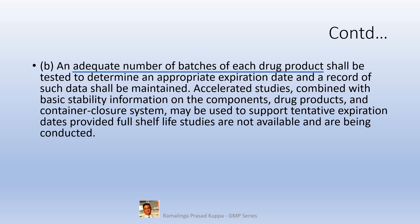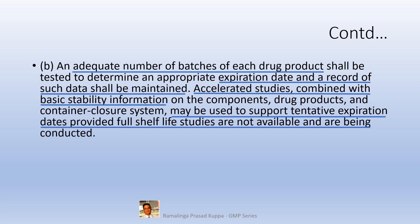An adequate number of batches of each drug product shall be tested to determine an appropriate expiration date, and records of such data shall be maintained. Accelerated studies combined with basic stability information on the components, drug products, and container closure systems may be used to support tentative expiration dates, provided full shelf-life studies are not yet available and are being conducted. As a statistical thumb rule, it is necessary to have three consecutive batches subjected to the study. Comparing data from accelerated and long-term study conditions, a tentative shelf life can be established. The ICH Q1E guide appendix A provides a detailed flow chart on decision-making for shelf life.